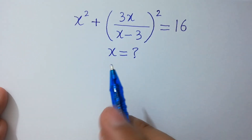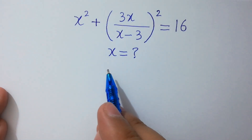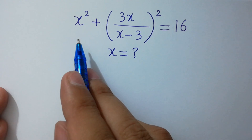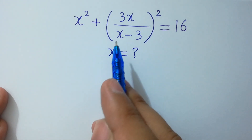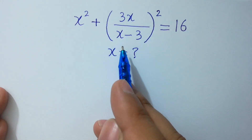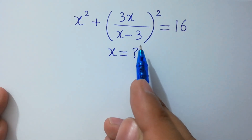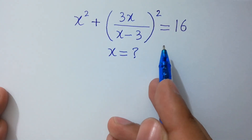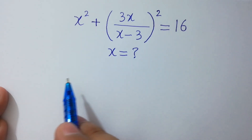Hello friends. Find the value of x if (x² + 3x)/(x - 3) whole square equals 16. Let's solve it.